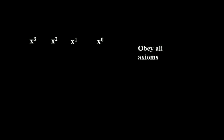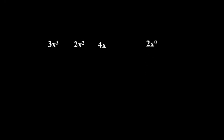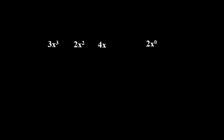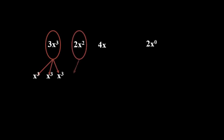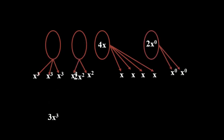Furthermore, if we consider x cubed, x squared, x, and x to the zero — all satisfying the axioms — then these vectors form a vector space containing all linear combinations. Therefore, 3x cubed, 2x squared, 4x, and 2 are vectors of this space, where 3x cubed is a linear combination of x cubed, 2x squared of x squared, 4x of x, and 2 is a linear combination of x naught. These are also vectors of the same space.